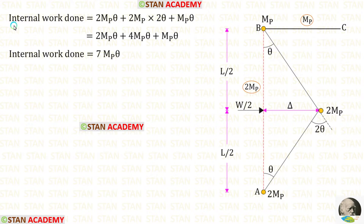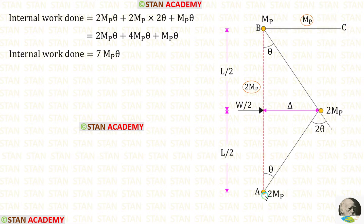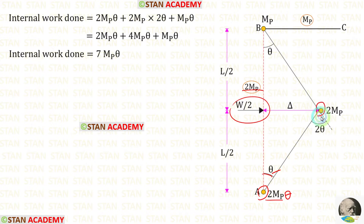Now let us find the internal work done. For column AB the plastic moment capacity is 2MP and for beam BC it is MP. At point A we have a plastic hinge; we multiply 2MP by angle θ. On the right of the point load we have a plastic hinge; we multiply 2MP by angle 2θ.